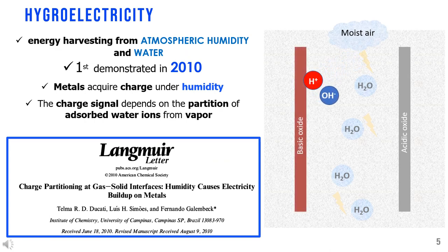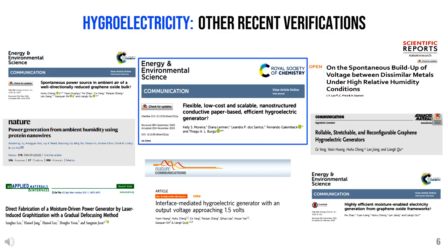Hydroelectricity is energy harvesting from atmospheric moisture. It was first demonstrated in 2010 when we showed that metals acquire charge under high humidity. This finding opposed the prevailing paradigm, but charge exchange with the atmosphere also explained many other phenomena. We explained it by considering the partition of absorbed or intercalated water ions from atmospheric water vapor, analogous to well-known electrification of solid-liquid interfaces.